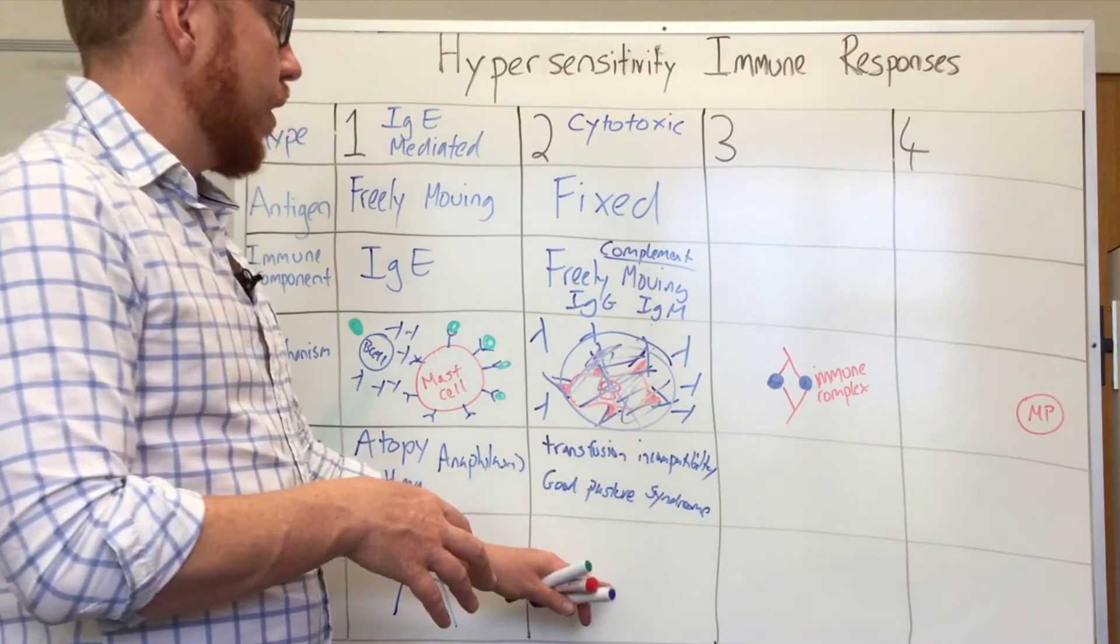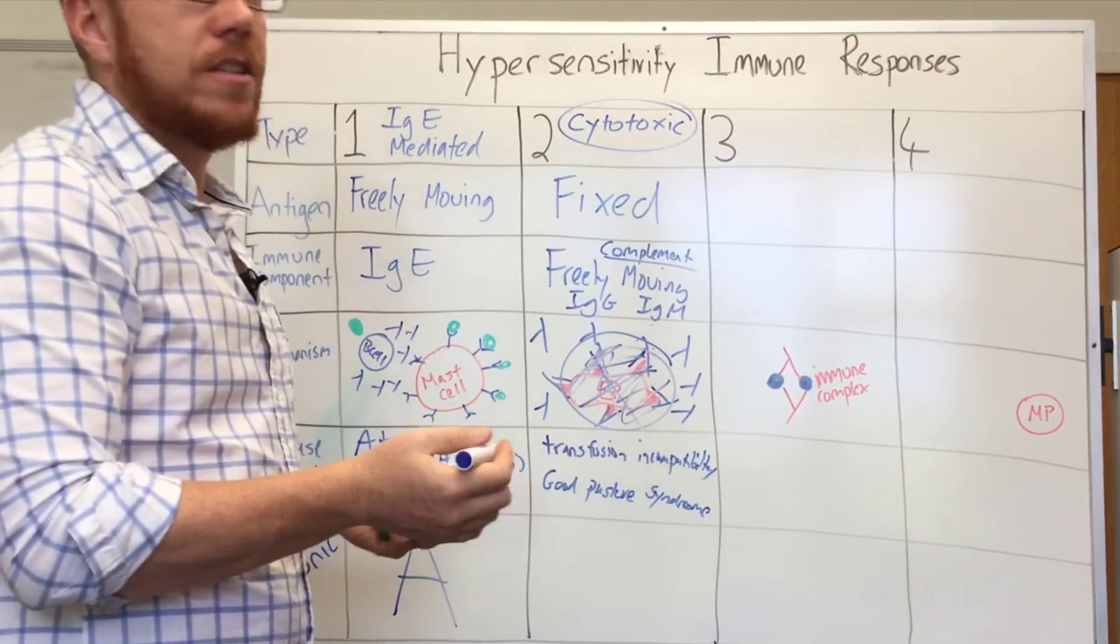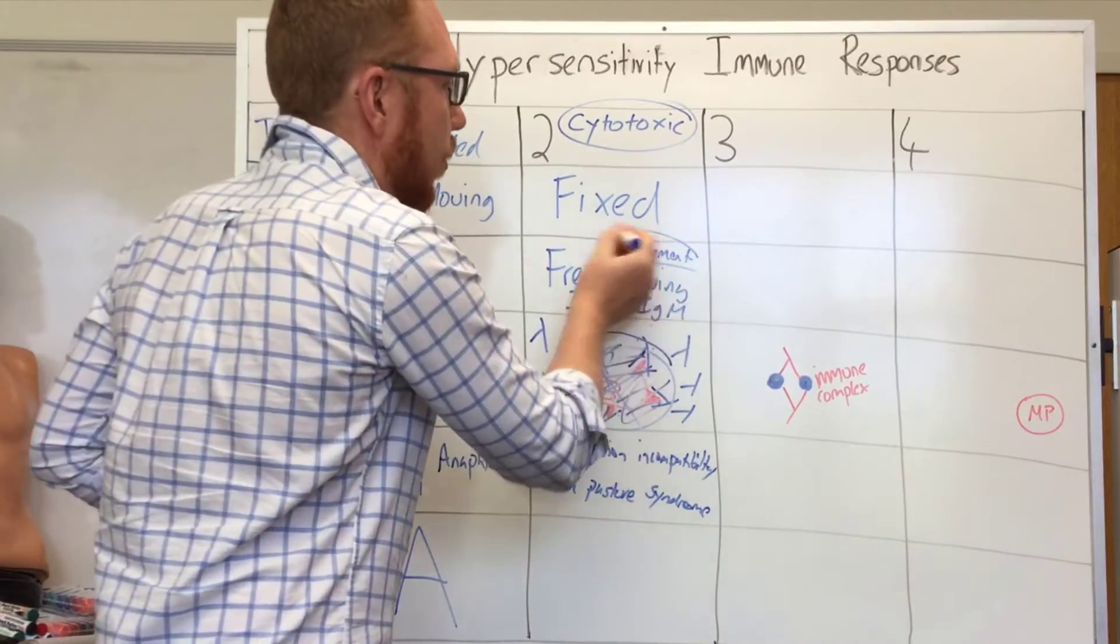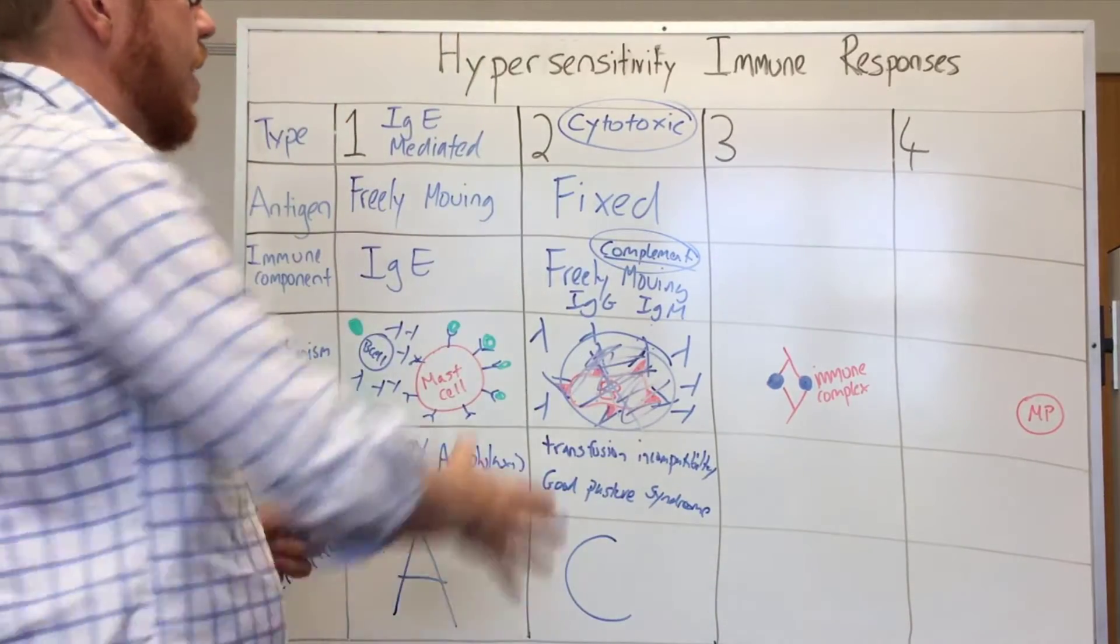Now in terms of the mnemonic, because we've got cytotoxic, it's a cytotoxic response, and because we use complement, we'll use the letter C. So that's the second type.